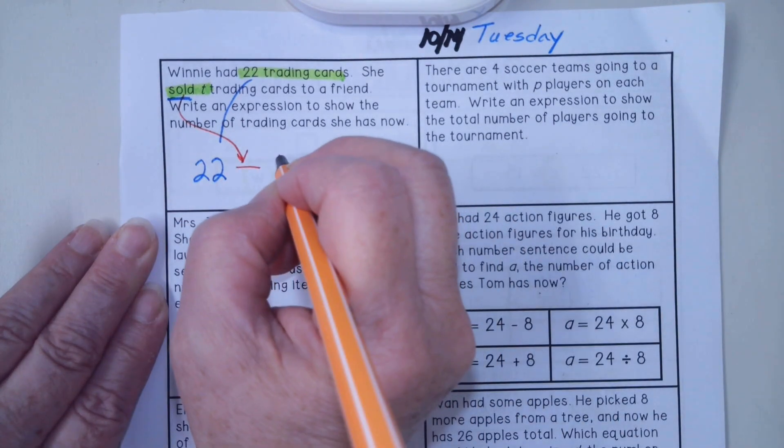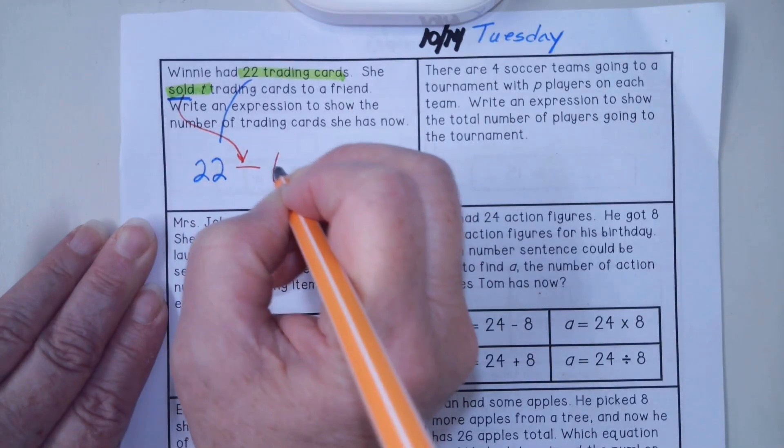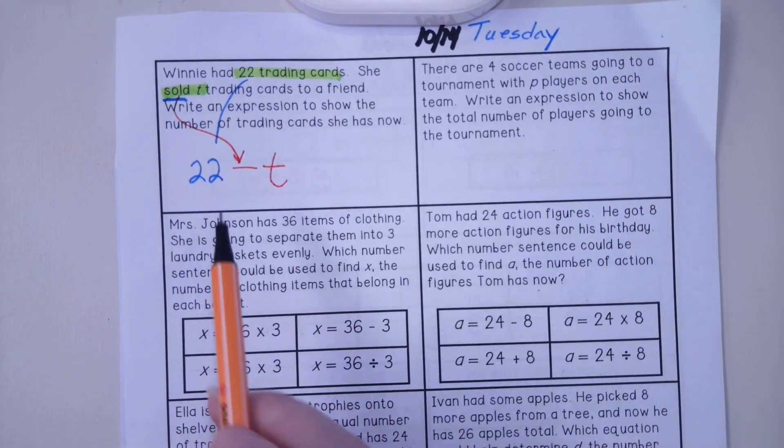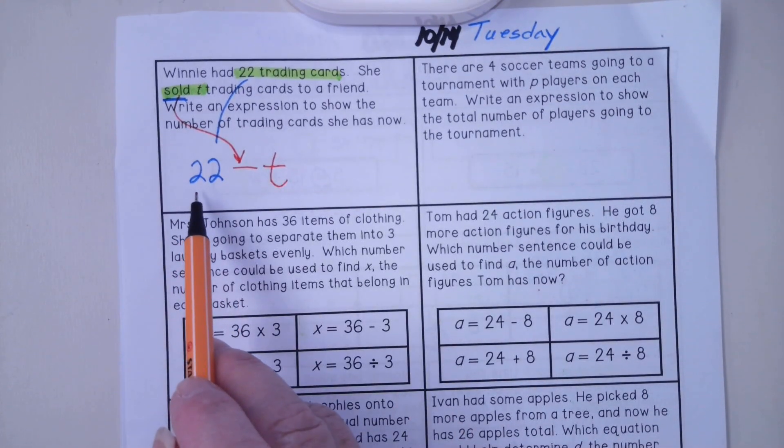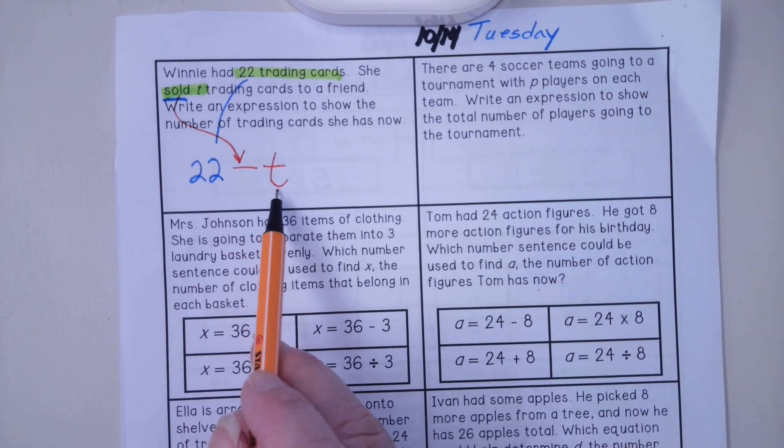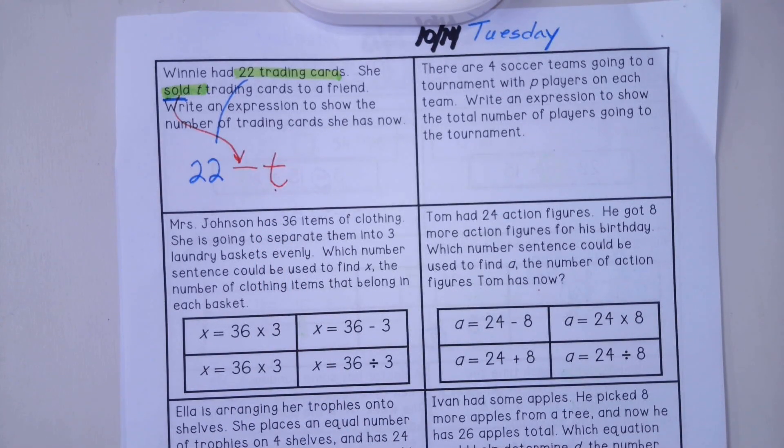And what we sold, we don't know. So we're going to put a T. I had 22 trading cards. I sold some. This is representing some. I sold some trading cards to a friend. How many does she have now?